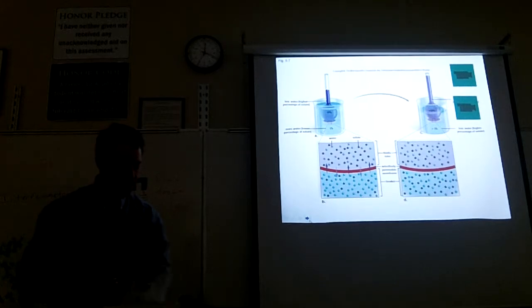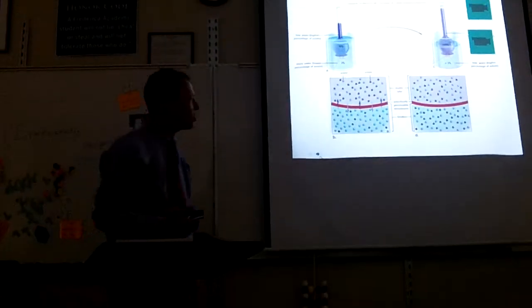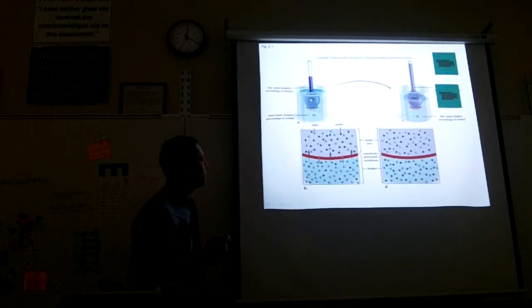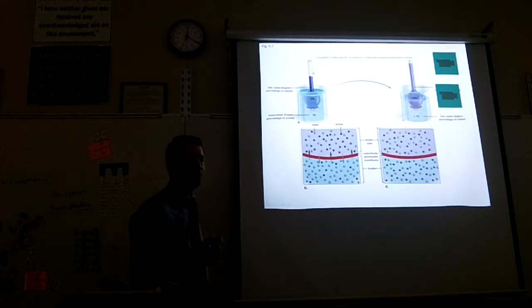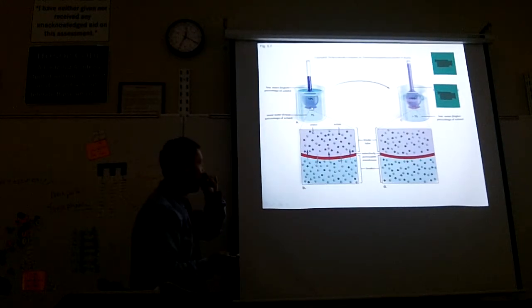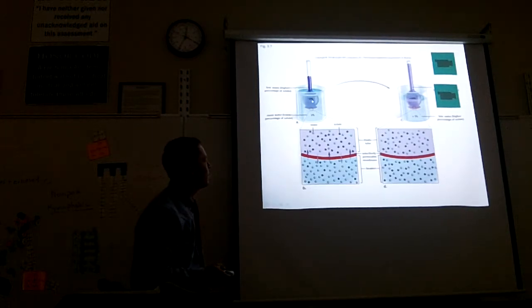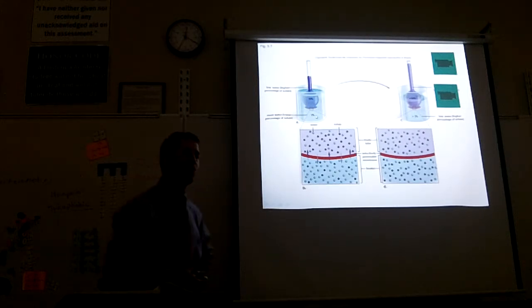I want to get to how water moves into and out of a cell. This special glass tube is called a thistle tube — you can do this experiment in the lab. Here we have a thistle tube full of a 10% sugar solution. If it's 10% sugar, it's 90% water — that's 10% solute. The beaker has 5% solute, or 95% water.